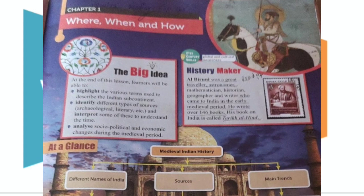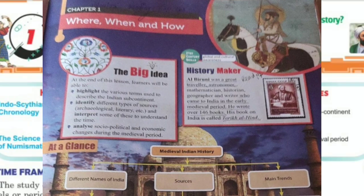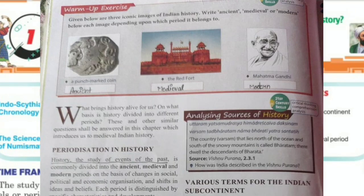Time frame of history. The study of history has long been carried under three different levels or periods: ancient, medieval and modern, in various parts of the world. Each period covers several centuries. The medieval period is the period that follows between the ancient and the modern periods. In India, the medieval period is considered to be the time period from the 8th century to the 18th century AD.